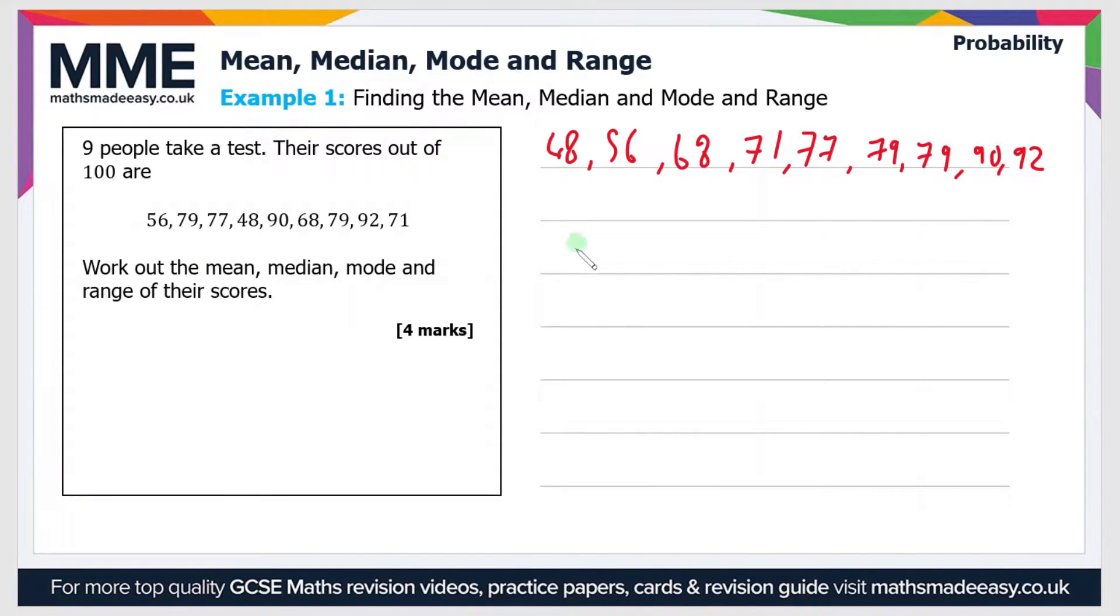So the first part then is to calculate the mean. Now the mean is the sum of the items divided by the number of items.